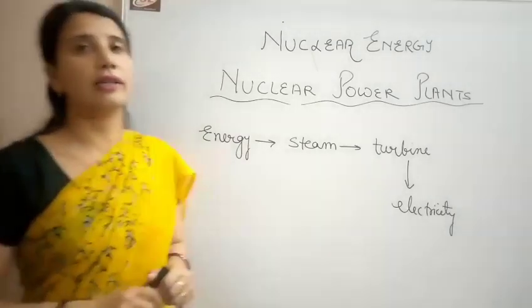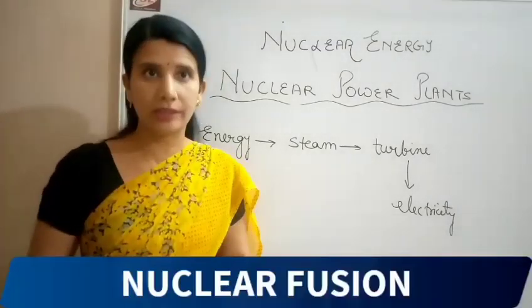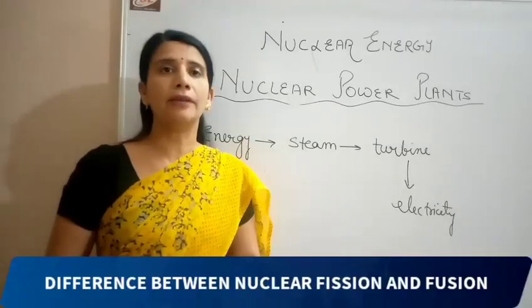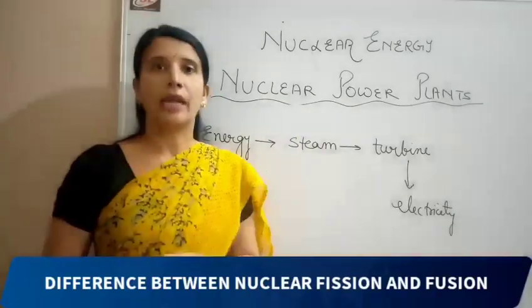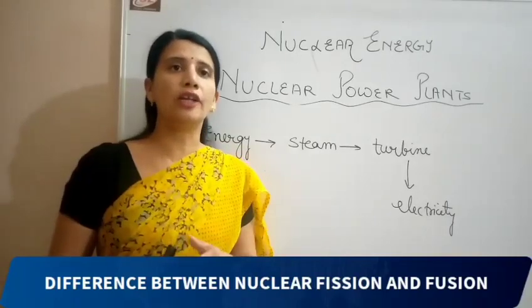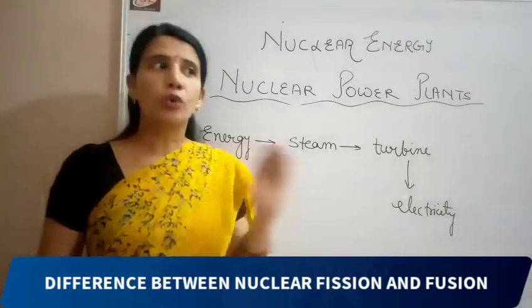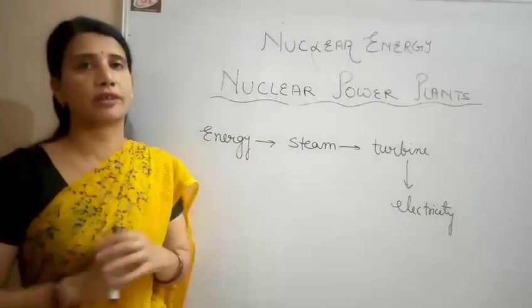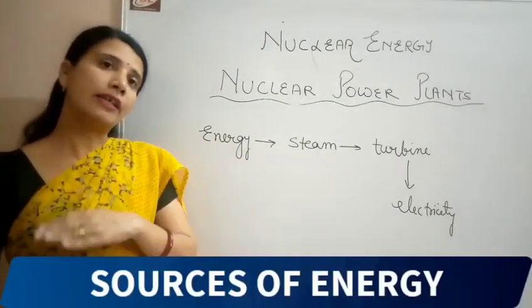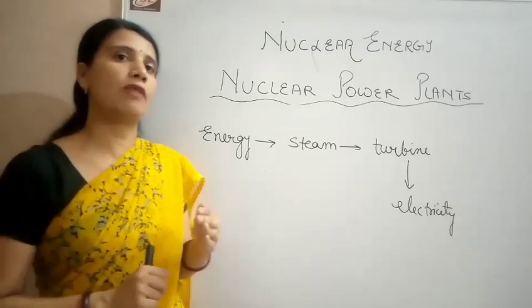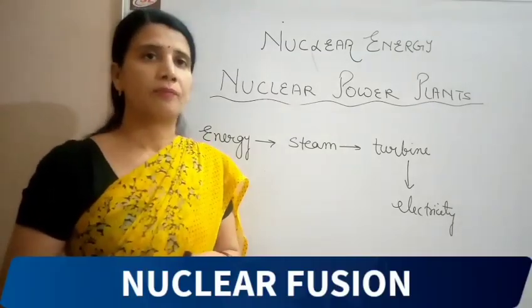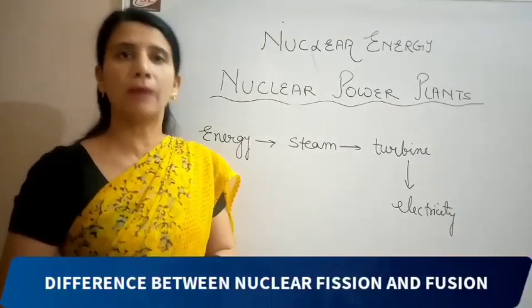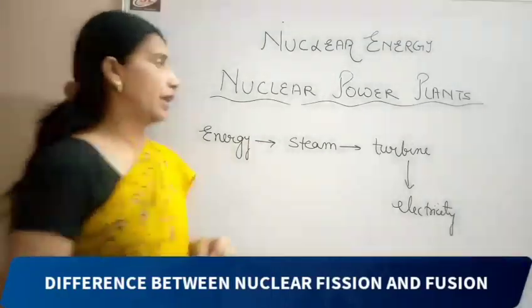In India we have a number of nuclear power plants. One of them is located in Rajasthan — the Rawatbhata nuclear power plant — and in many other places in India. Nuclear power plants were earlier used in a destructive way. After that, their constructive use in the production of electricity was realized and they started producing electricity with the help of nuclear power plants.